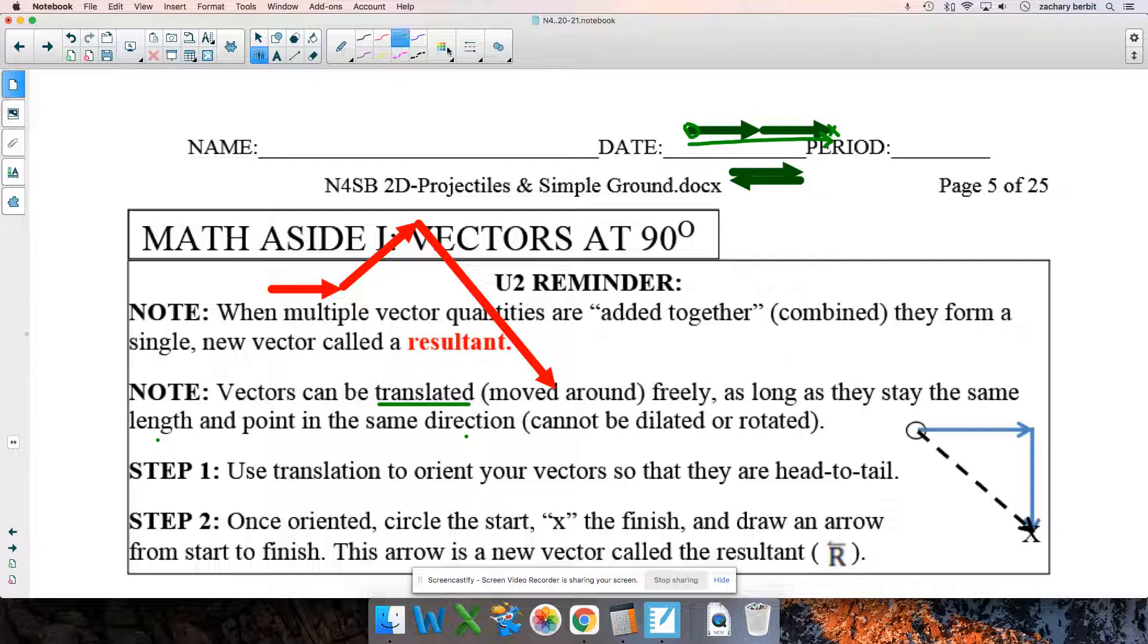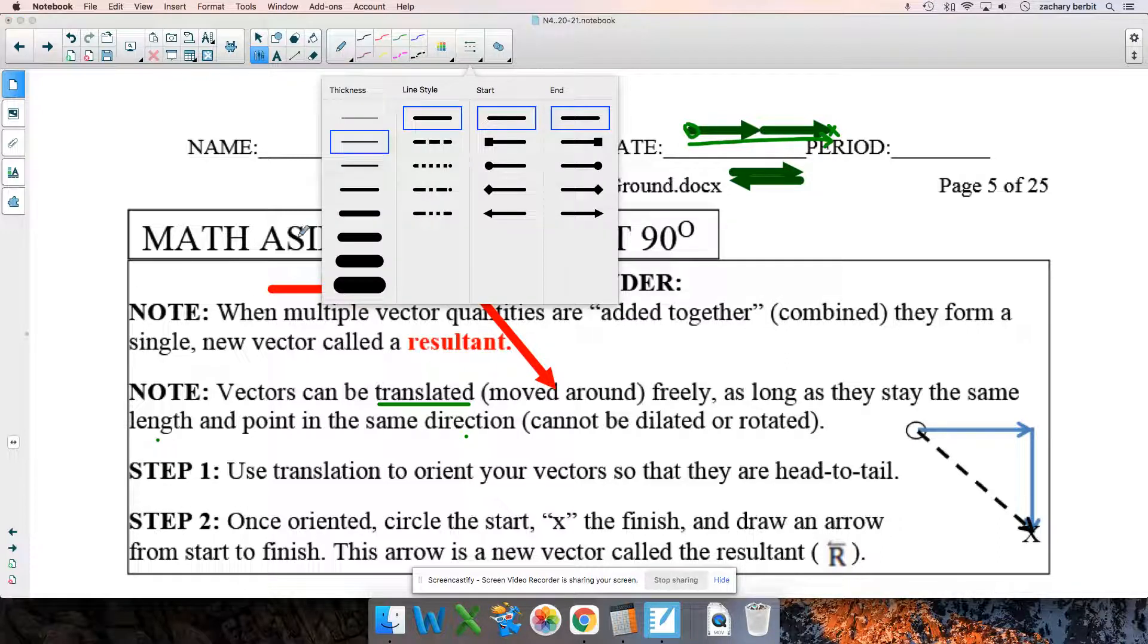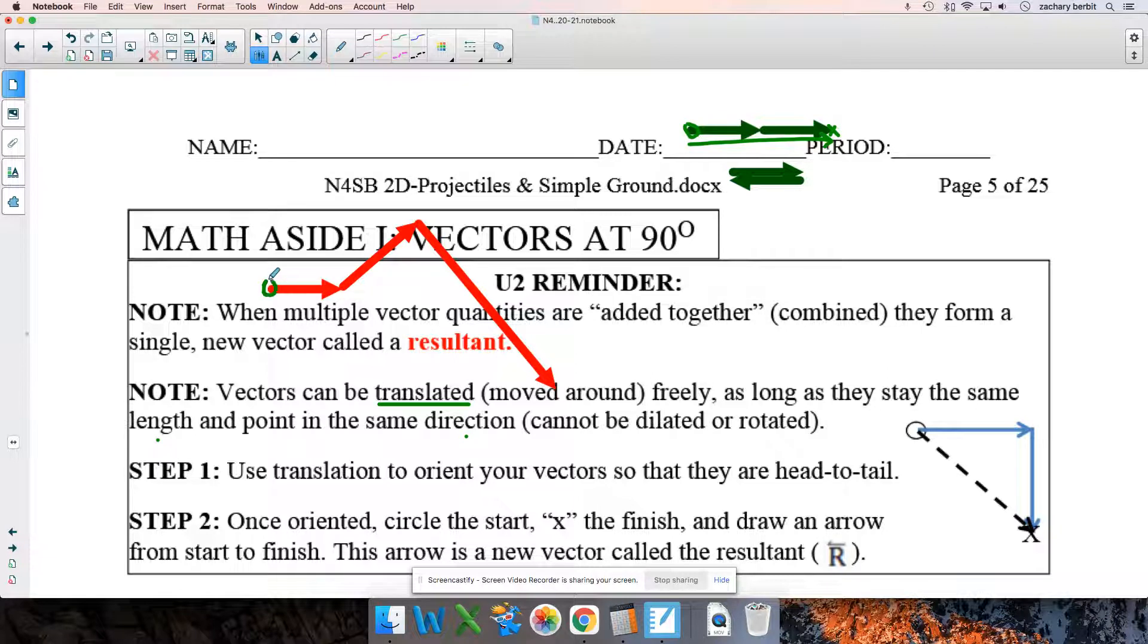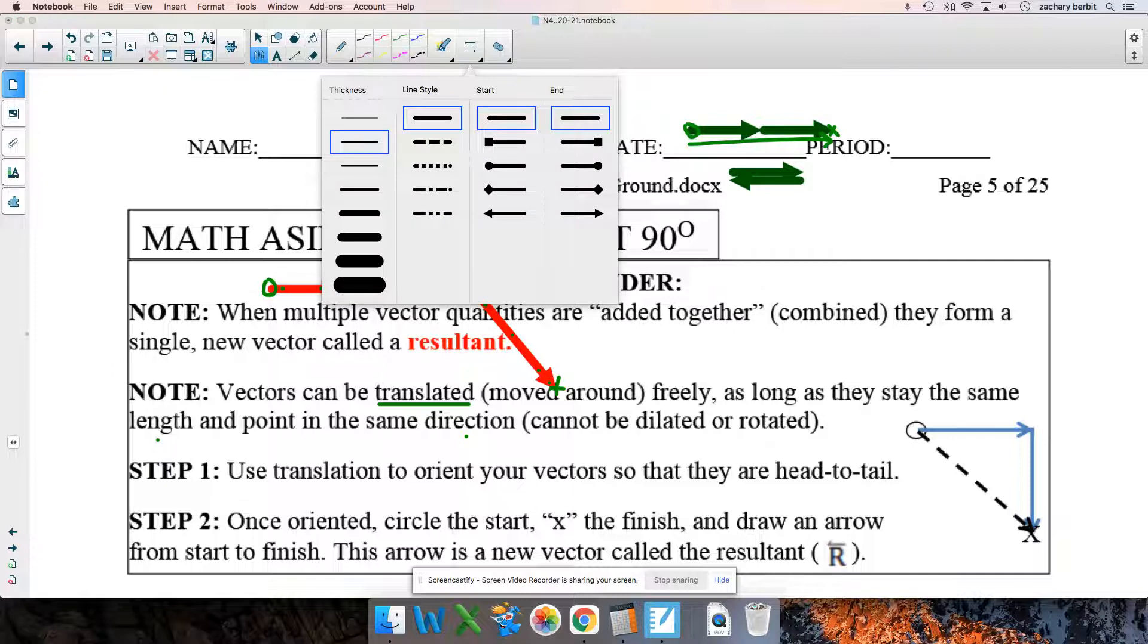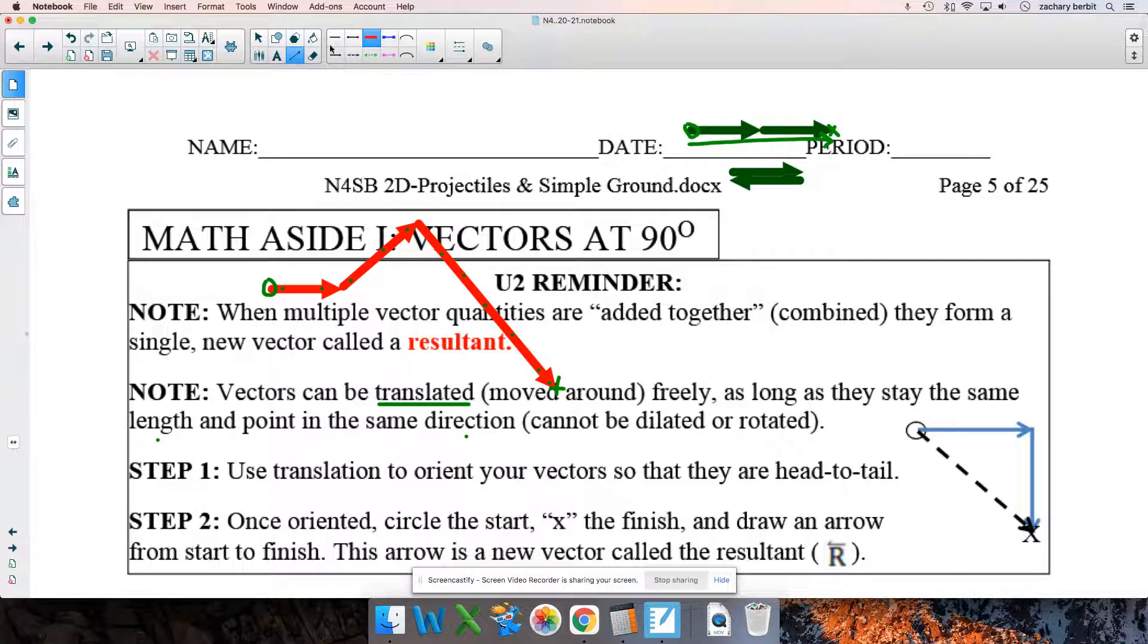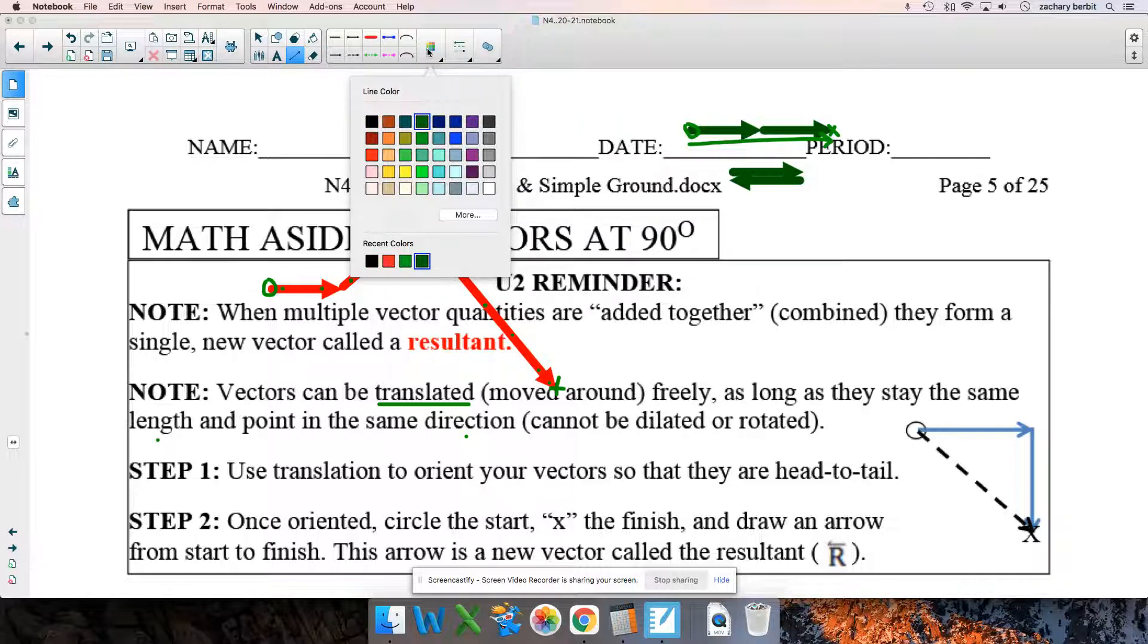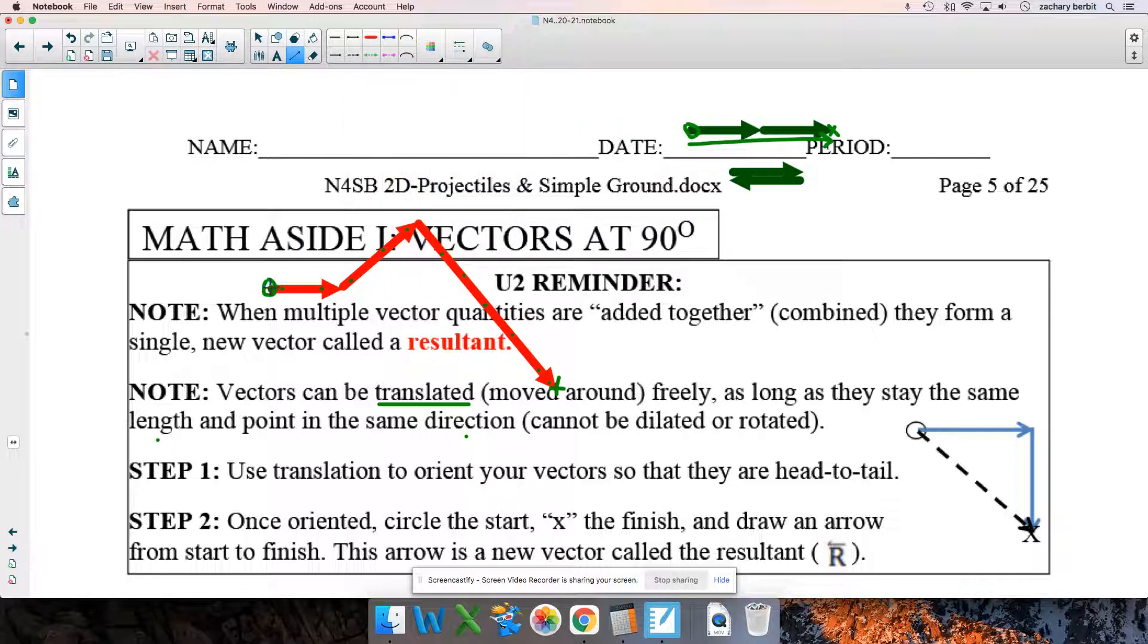Circle to start, X to finish. So, here's the start. The exposed tail is the start. Follow the path. Arrows directly where to go. Ah, there it is. The exposed head is the finish. There's the X. I'm going to try to draw this one a little more carefully. So, our final line here, a resultant, that should be directly from the circle, the X. There it is.